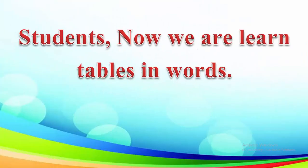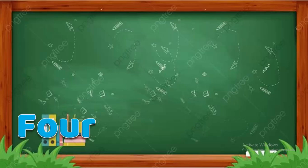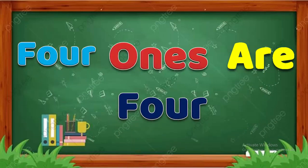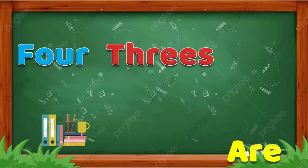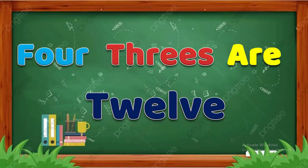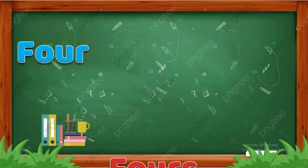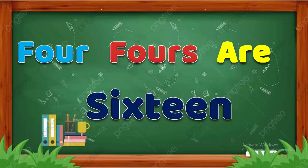Students, now we have learnt the table in words. Four ones are four. Four twos are eight. Four threes are twelve. Four fours are sixteen.